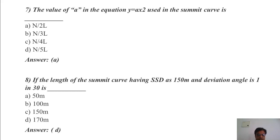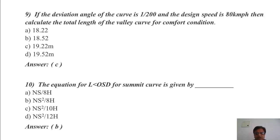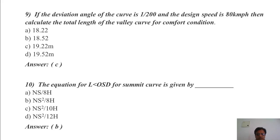Q9 — If the deviation angle of the curve is 1 in 200 and the design speed is 80 km/h, calculate the total length of the valley curve for comfort condition. Using formula L = 0.38 × (NV³)^(1/2), substituting values, we get 19.22 m. Answer: C. Q10 — The equation for L less than OSD for a summit curve is given by: NS²/8H. Answer: B.